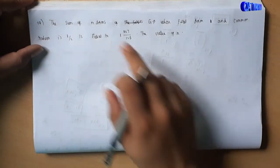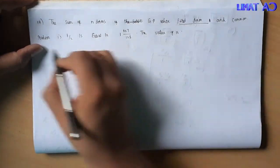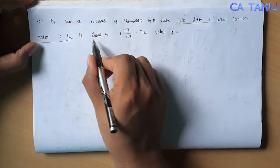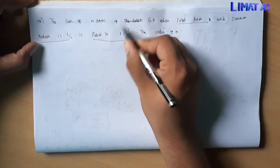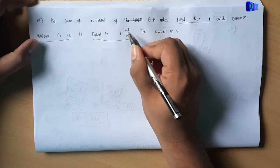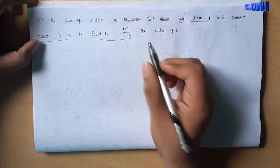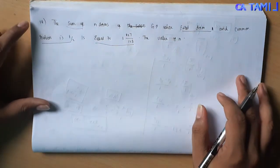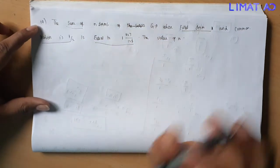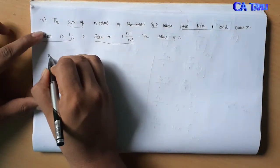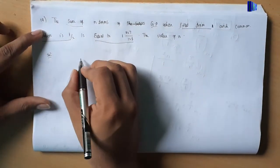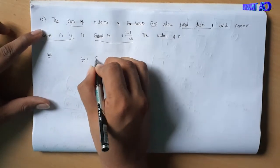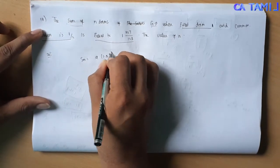Sum number 19: the sum of n terms of a GP whose first term is 1 and common ratio is 1/2. The sum of n terms formula for a GP is Sn equal to a into 1 minus r to the power n, divided by 1 minus r.